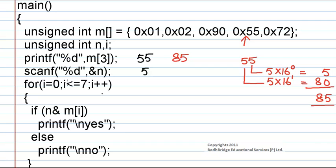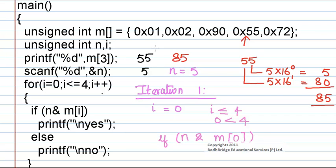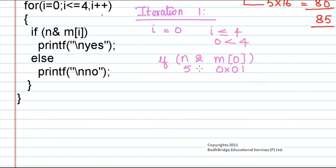Now let us check the for loop, with n equal to 5. For iteration 1, i equals 0 and the condition limit is 4. Since 0 is less than 4, the loop executes. Within the loop there is an if condition: n bitwise AND m[0]. m[0] is 0x01 — a hexadecimal value — and n equals 5 in integer format.